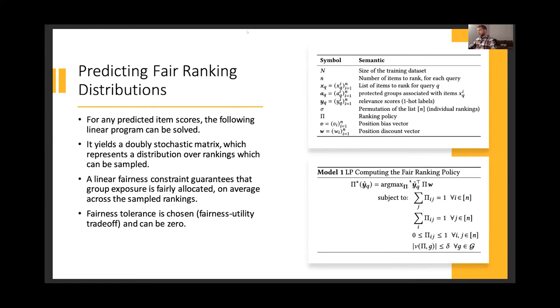So in our model, we assume that we are able to predict with some neural network a list of item scores, which are the y hats here in the objective to this linear program. That's the predicted part. The rest of this optimization is static. It's constant for any given input. So the first constraint says that the solution to this problem is going to be a matrix and that every row sums to one. The second constraint says every column sums to one. Also every component of the solution needs to be between zero and one. So these constraints guarantee that the output of this optimization will be a doubly stochastic matrix.